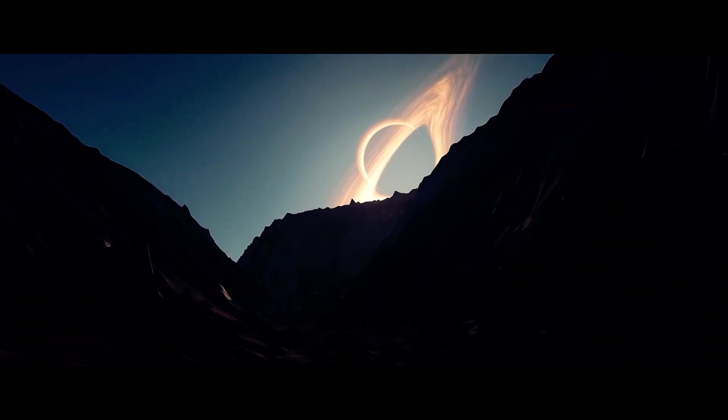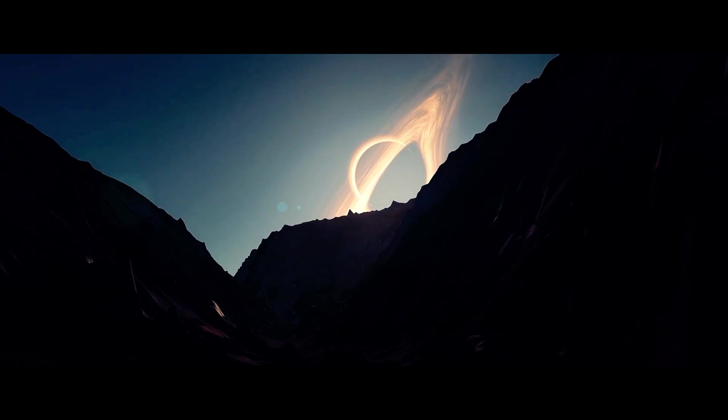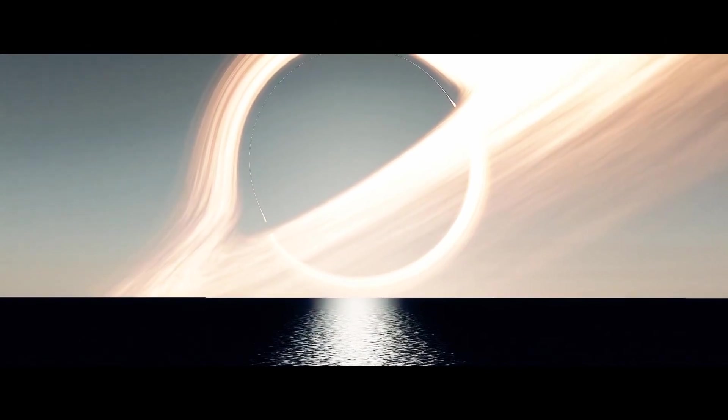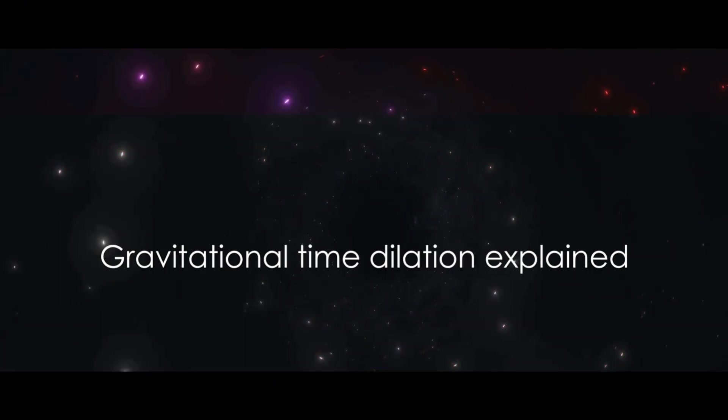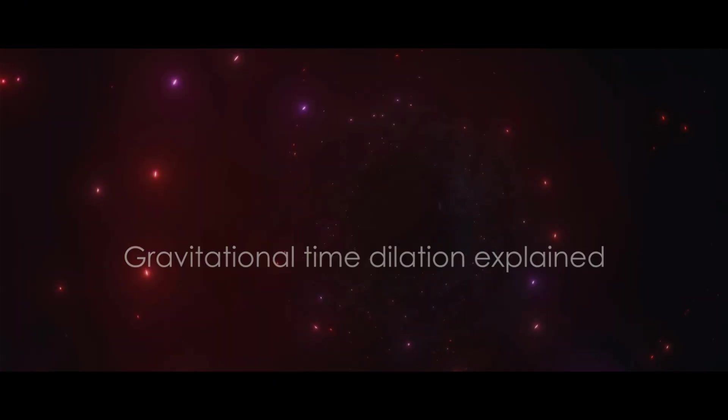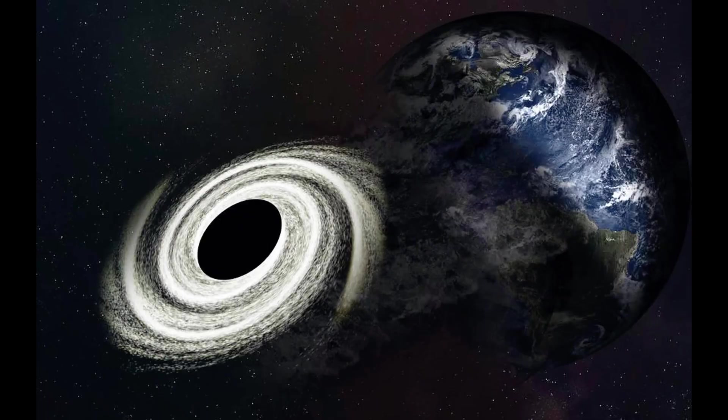So, what would happen if Earth found itself in the grasp of a black hole's gravity? Well, firstly, we'd need to consider gravitational time dilation. Now, you might be thinking, what's that? Simply put, it's a difference in the elapsed time measured by two observers due to a gravitational field. In the context of a black hole, time would appear to slow down as we get closer to it.